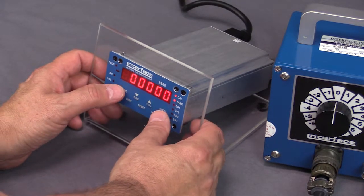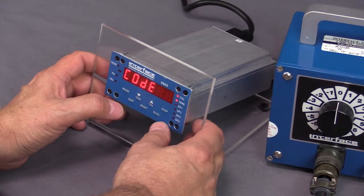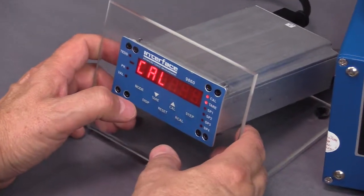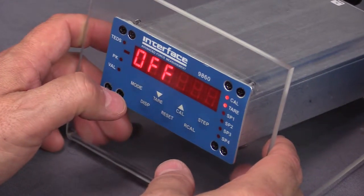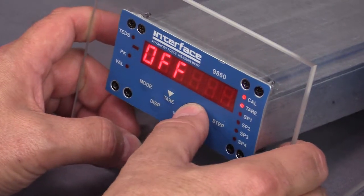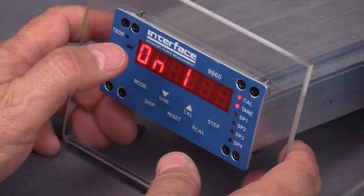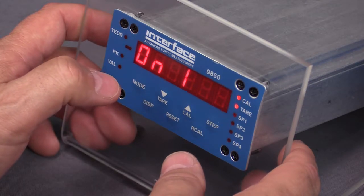We're going to hit the mode button and then arrow up, down, up, which is the code to get into the settings. Hit the up button, changing this to cal on one. That's the mode that will do live load calibrations.